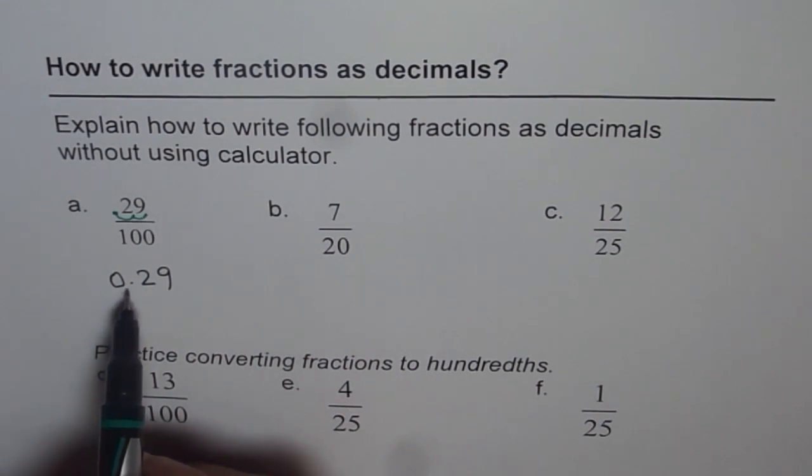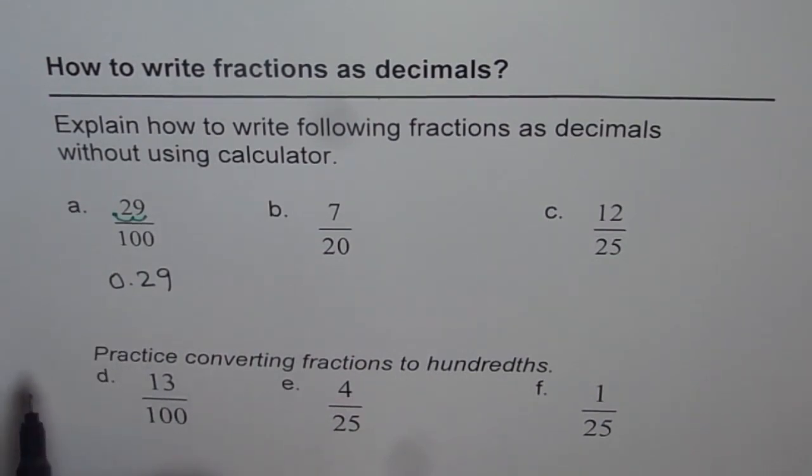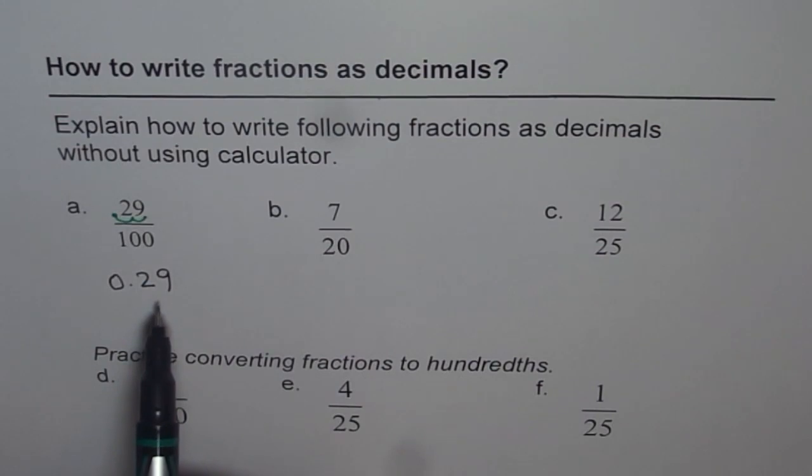So on the left of the decimal, always, if there is nothing, put 0. That is a good practice. So we get 0.29 as the decimal equivalent of the fraction 29 divided by 100.